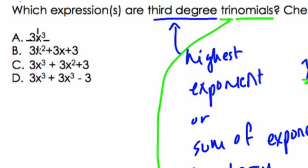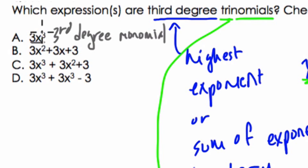The first one, 3x³—well, this is one term. This is a third-degree monomial. Mono means 1, there's one term here. It's third-degree because the exponent is 3. But we don't need a third-degree monomial, we need a third-degree trinomial. That's gone.